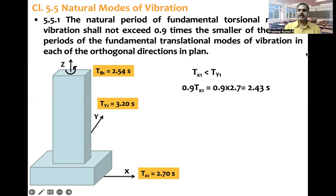But what code says here is this torsional mode of vibration shall not exceed 0.9 times the smaller. So the smaller value is 2.7. So 0.9 times 2.7 is 2.43. But T theta is 2.54 seconds. So that means T theta is greater than 2.43 seconds. So that means this is not a good thing. So we are violating the clause of the code.